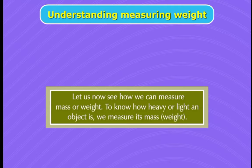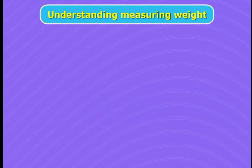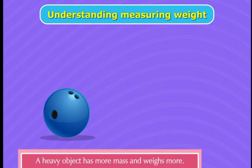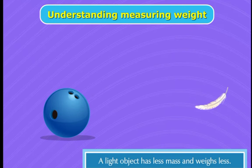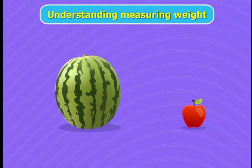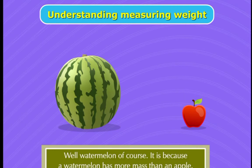Let us now see how we can measure mass or weight. To know how heavy or light an object is, we measure its mass or weight. A heavy object has more mass and weighs more. A light object has less mass and weighs less. A watermelon is heavier than an apple because a watermelon has more mass than an apple.